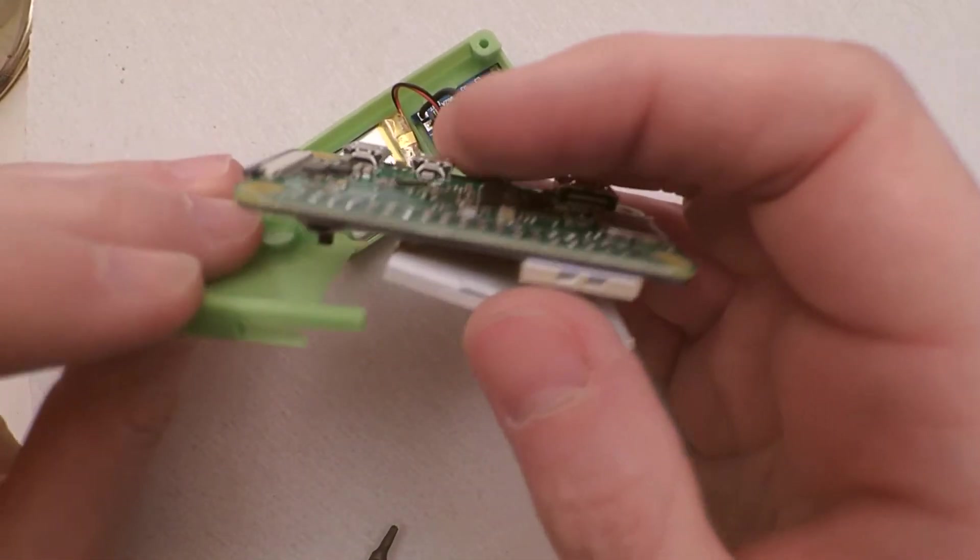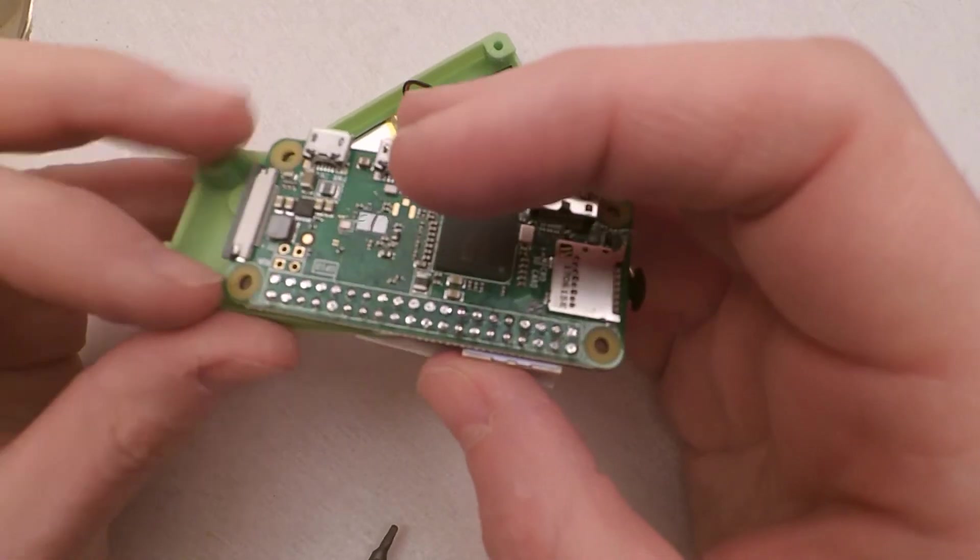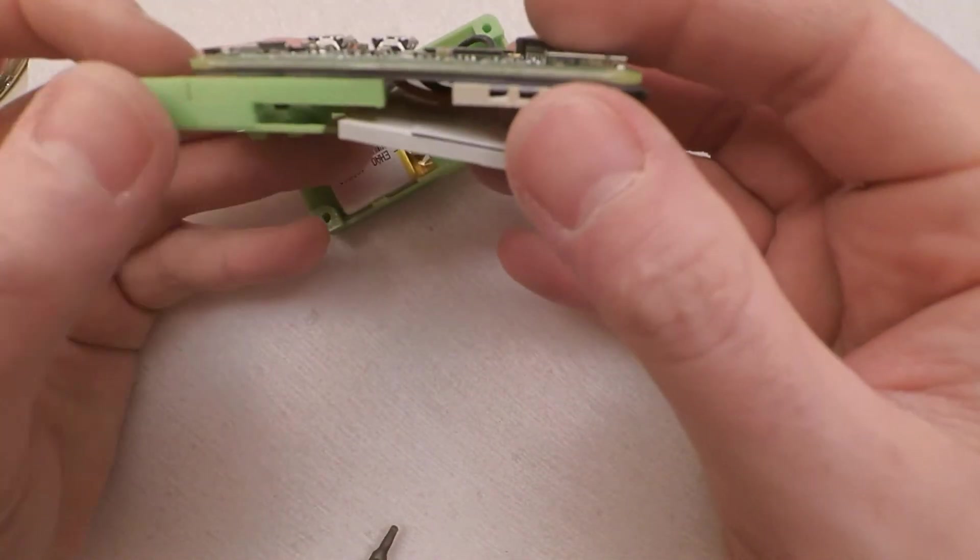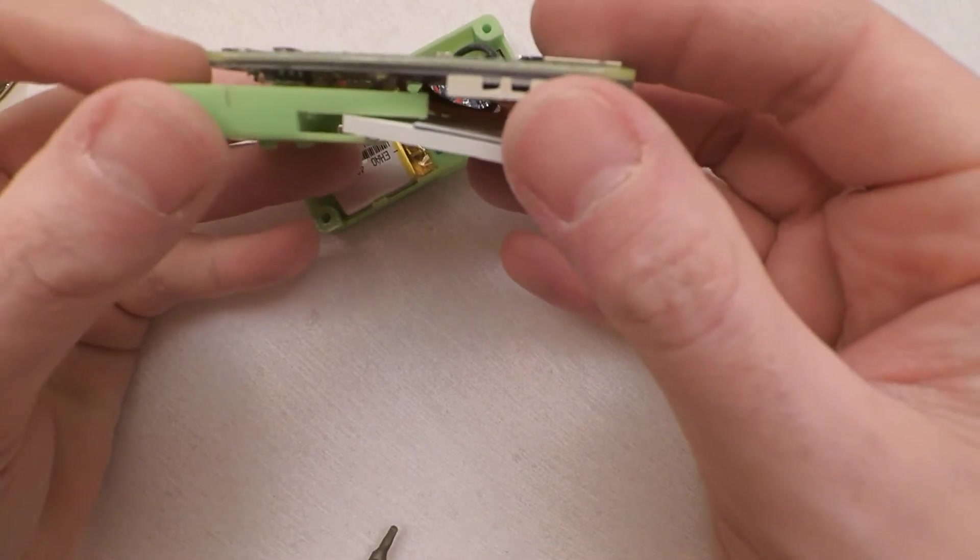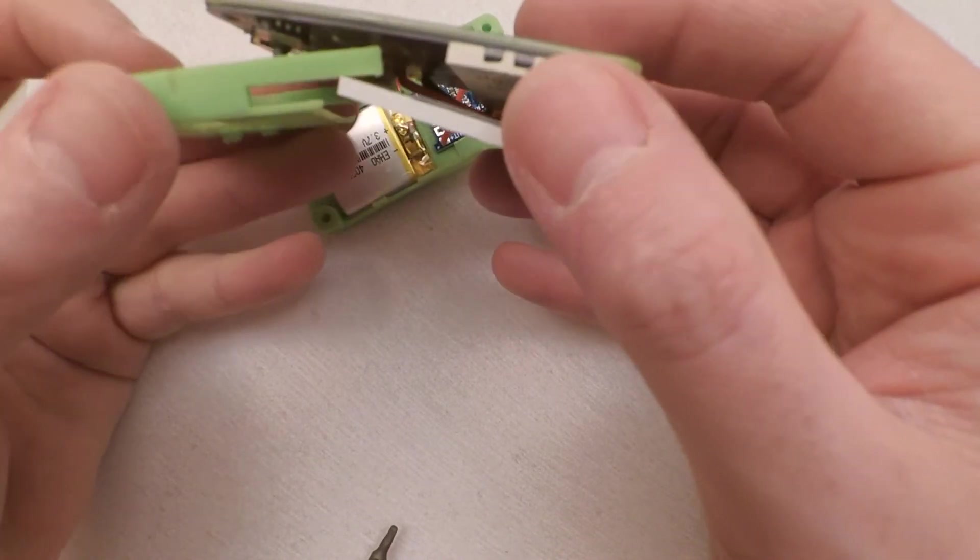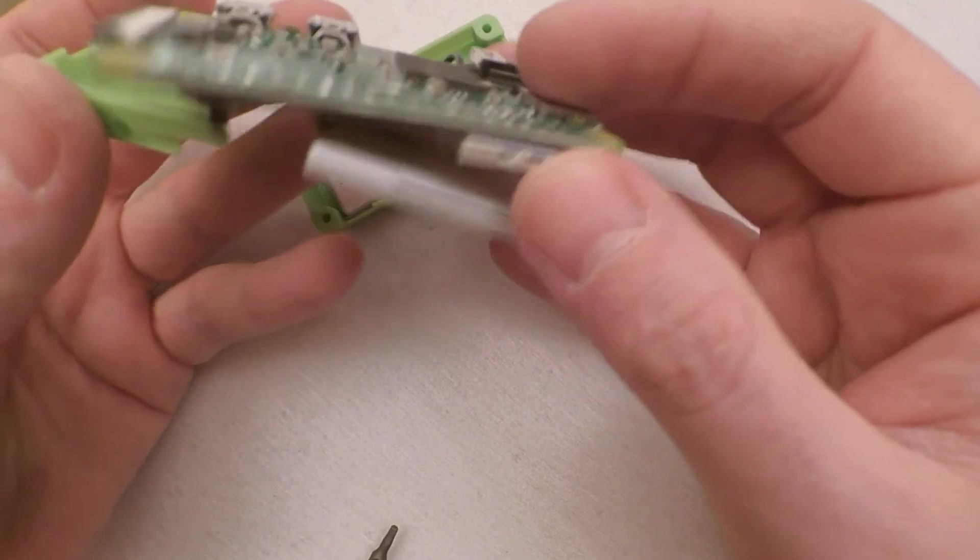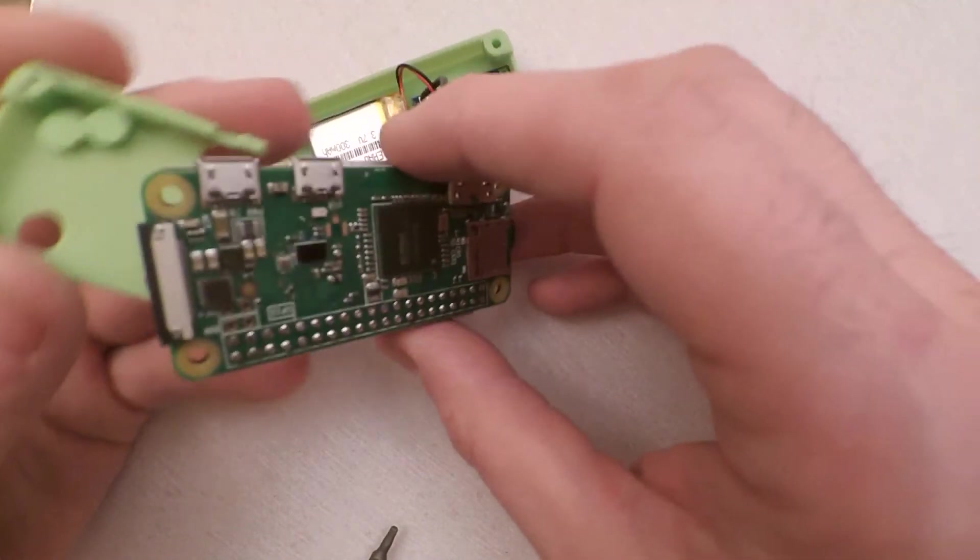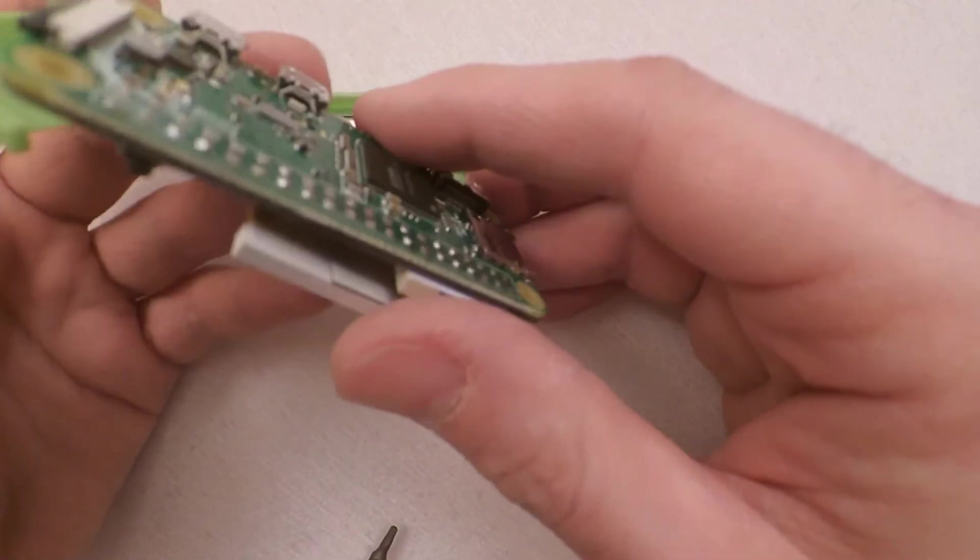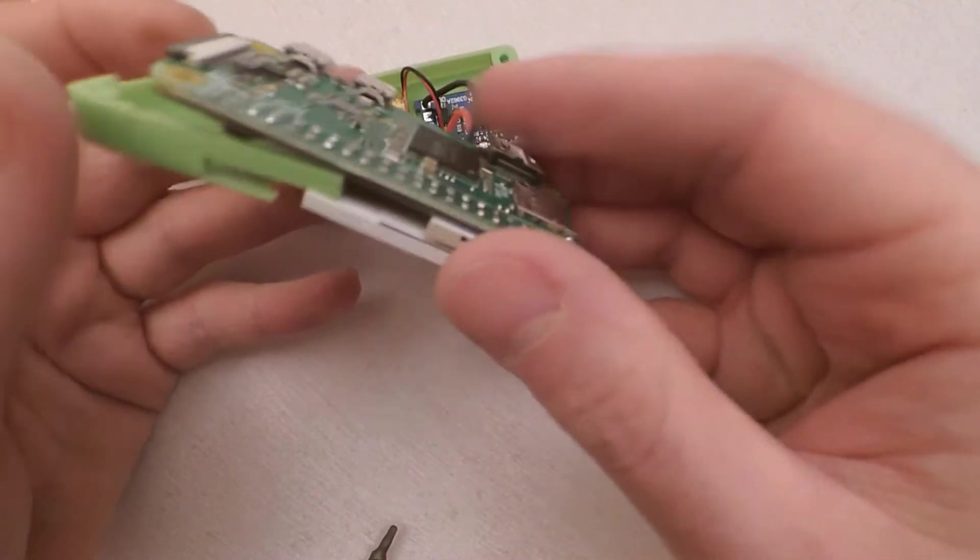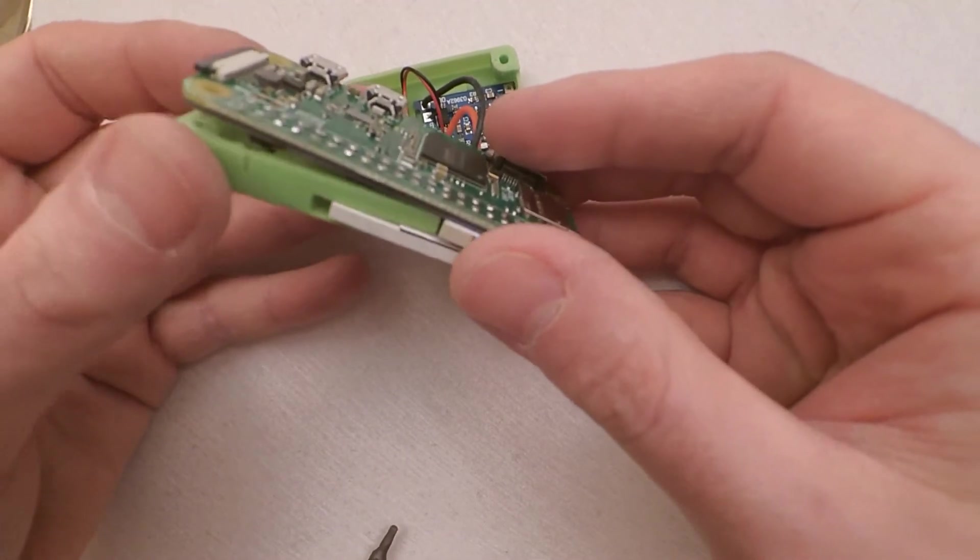Take your time with it because you can quite easily damage the screen. So the screen has to slot inside there and the same on the other side. I've not found a magic way to do this yet, it's just a case of take it gentle and slow. You know the best is to just tease it under like that.